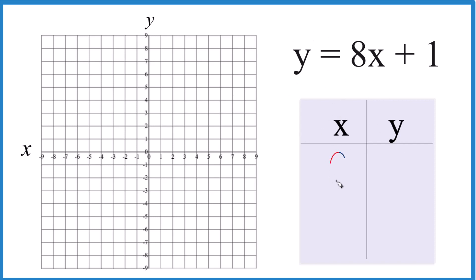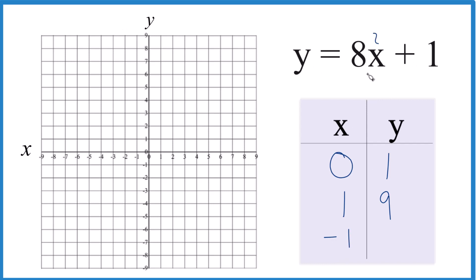It's always good to start with x = 0, because 8 times 0 is 0, plus 1 is 1. I'm just making these numbers up, but I want them to fit on my graph. So for x = 1: 8 times 1 is 8, plus 1 is 9 — that should fit. How about negative 1? Because if I do x = 2, I get 16, so y equals 17 — that's not going to work on my graph. So for x = -1: 8 times negative 1 is negative 8, plus 1 is negative 7.